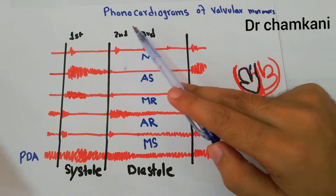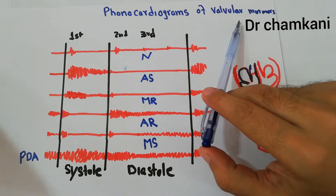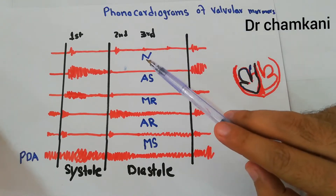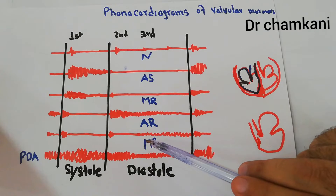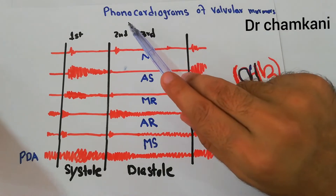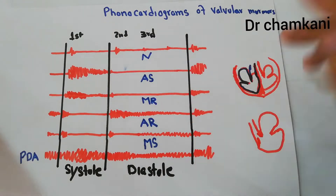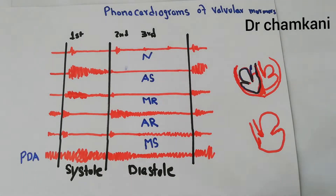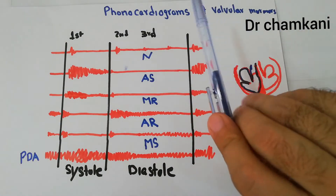Today we are going to discuss the phonocardiograms of valvular murmurs — the different types of valvular murmurs which we have discussed in detail: the murmur of aortic stenosis, mitral regurgitation, aortic regurgitation, and mitral stenosis. A phonocardiogram is a recording of different heart sounds and heart murmurs with the help of a machine. The first thing we see is the phonocardiogram of normal heart sounds.